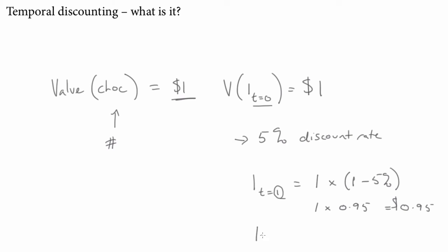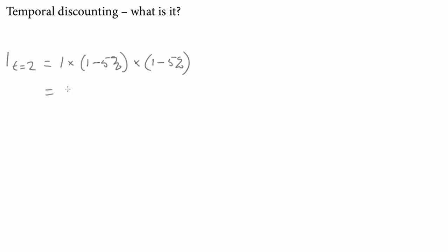So for a person with a 5% discount rate, one chocolate in a week's time is worth only 95 cents, whereas a chocolate right now is worth a dollar. What about a chocolate in two weeks' time? Now we go 1 multiplied by, and you have to discount first for one week, and then you have to discount again for the second week. That equals 1 times 0.95 times 0.95, which turns out to equal 90 cents, ignoring some decimal places.